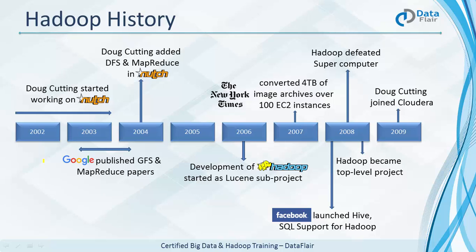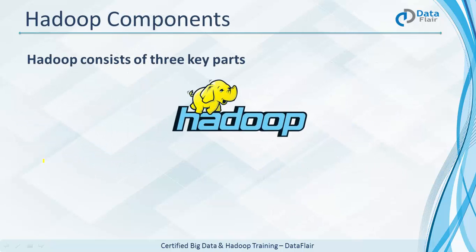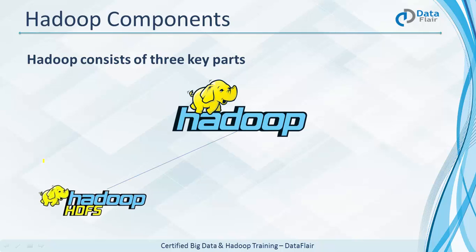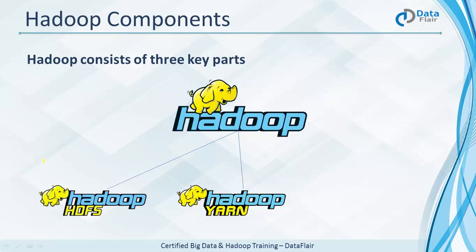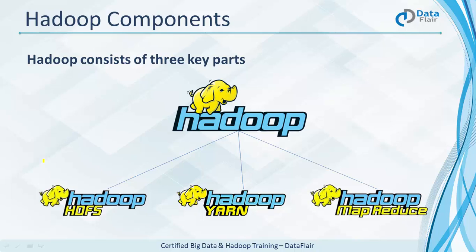In 2009, Doug Cutting joined Cloudera and the momentum of Hadoop development started like anything. Now let's talk about Hadoop components. Hadoop consists of three key components. The first is HDFS — the storage layer of Hadoop and the world's most reliable storage layer. The second is YARN — the resource management layer, which manages the cluster resources. The third is MapReduce — the processing layer at the application level, used for processing the data.